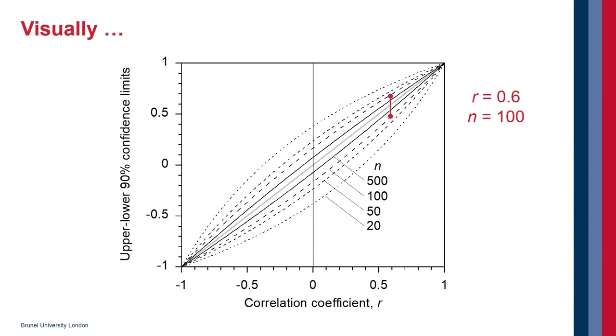So the way you interpret this graph is, here's an example: you've got to measure some data and you've obtained a value for correlation coefficient of 0.6. But these curves show the confidence limits. And so the confidence limits for this correlation coefficient of 0.6 actually could be somewhere between 0.7 and 0.5.